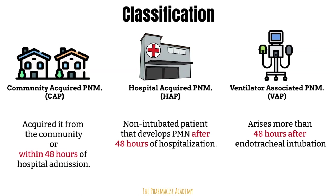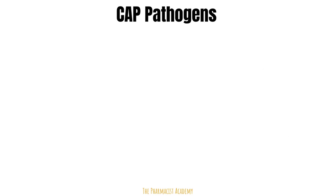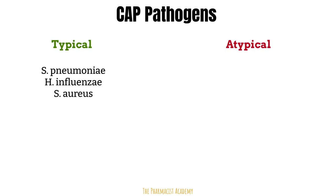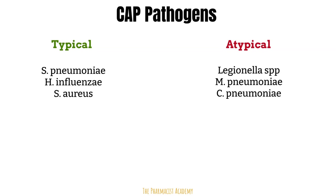Depending on which classification of pneumonia it is, you may see more of a specific type of bacteria than others. For the pathogens commonly seen in CAP, we divide them into typical and atypical. Typical bacteria are easy to identify when cultured and have a color when stained. Atypicals are hard to identify and remain colorless when stained. Common typical pathogens include strep pneumo, H. influenzae, and staph aureus. Atypical pathogens include legionella, mycoplasma pneumoniae, and chlamydia pneumoniae — listed from most to least common.